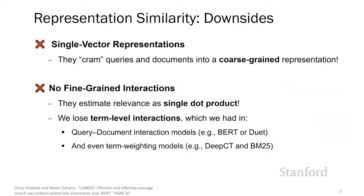So why is that? As it turns out, representation similarity models suffer from two major downsides for IR tasks. First are their single vector representations, which involve cramming each query and each document into one rather low-dimensional vector. Second is their lack of fine-grained interactions during matching. Representation similarity models estimate relevance as one dot product between two vectors, and thus they lose the term-level interactions between query terms and document terms that we had in query-document interaction models like BERT. Even simple term weighting models like BM25 or DeepCT had by design some element of term-level matching that we lose here.